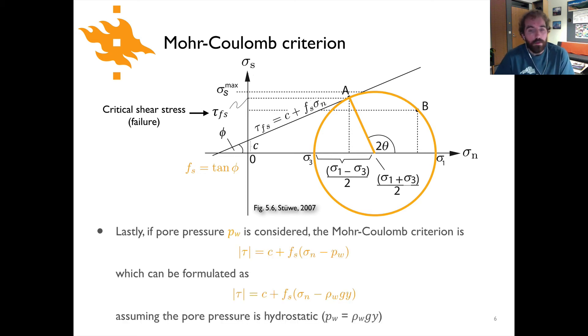Now the last thing we can talk about with respect to the Mohr-Coulomb criterion is the idea of pore pressure. This has to do with fluids within the pore space in rocks and how fluids in the pore spaces might affect the frictional strength of rock. So here again is our tau, our shear stress. This is basically the Mohr-Coulomb criterion modified to include pore pressure. We have the magnitude of our shear stress being equal to the cohesion plus the coefficient of friction Fs times sigma n, which we had before, but now it's sigma n minus the fluid pressure or the pore pressure Pw.